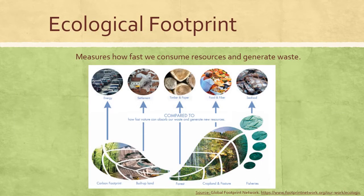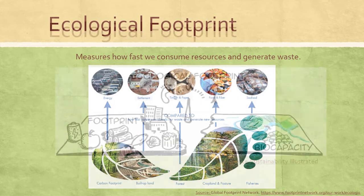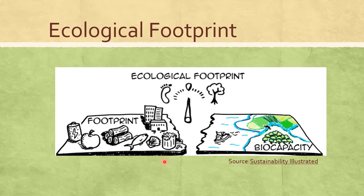Everything we consume uses resources and produces waste, and nature must have the ability to meet this demand. The ecological footprint measures the demand and supply of nature. The size of a person's ecological footprint will depend on many factors: do you grow your own food? Do you walk or drive? Do you use renewable or non-renewable energy sources? Everyone has an ecological footprint, which can measure the impact from a single person up to an entire country. The ecological footprint tells us the amount of water and land required to produce what we consume and to absorb the waste we generate. Biocapacity is the biologically productive area available to provide the resources we use and to absorb the waste we generate.